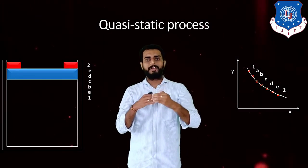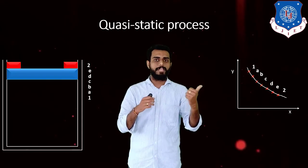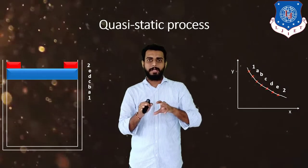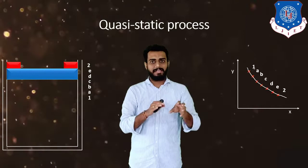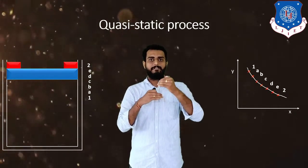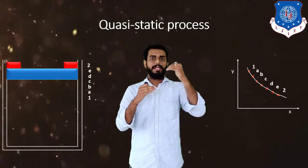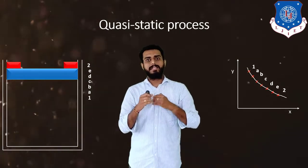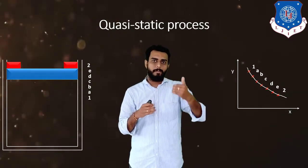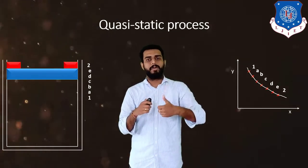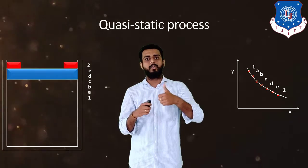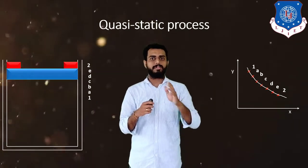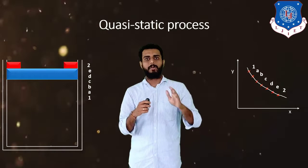The difference between the previous procedure and this one is that using this method we can find intermediate states for any process. This is a very slow process, and this kind of process is known as a quasi-static process — quasi means almost static.